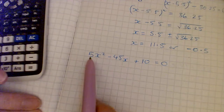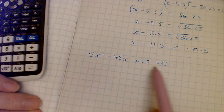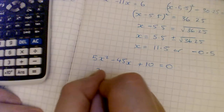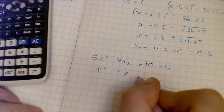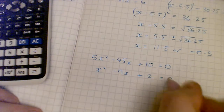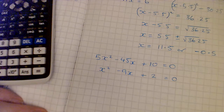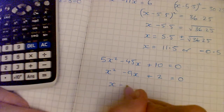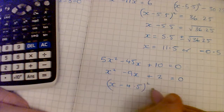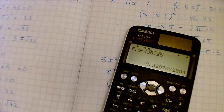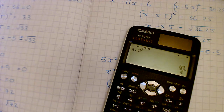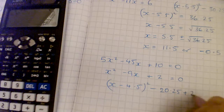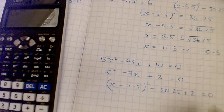This question has a number in front of x squared, so first I divide everything by 5 to get rid of it. That gives x squared minus 9x plus 2 equals 0. Now complete the square: x minus 4.5, half of 9, squared, take away 4.5 squared which is 20.25, plus the 2 at the end, equals 0.